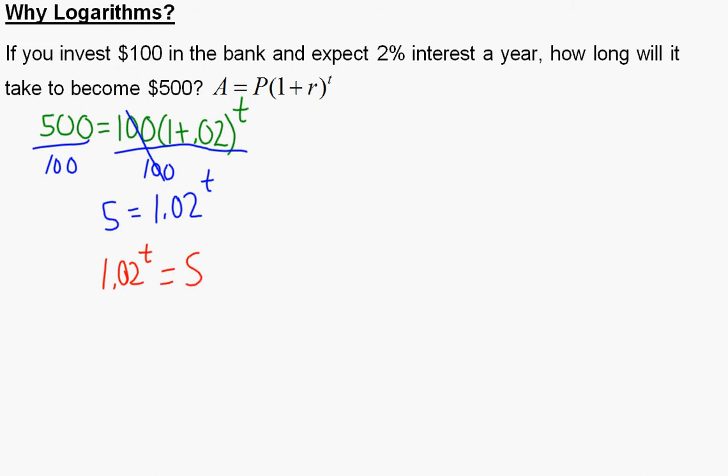And then I'm going to change this to a log. So here's how logs work. You basically write the word log in front of this, and you switch these two. So I'm going to switch those two. I'm going to go 1.02 and switch these to the fifth equals t. And what I do is I simply write the word log in front. Log 5, and the base is now 1.02.